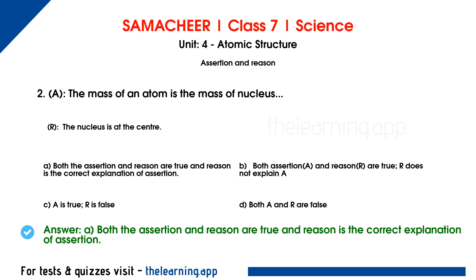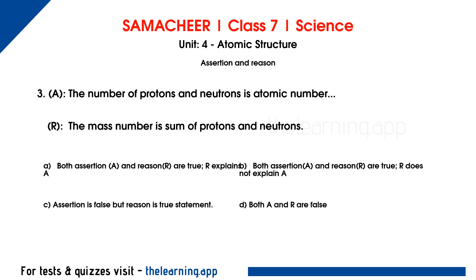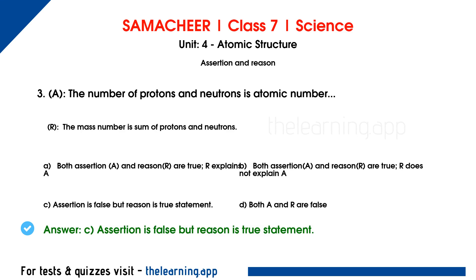Third assertion-reason question — Assertion: the number of protons and neutrons is the atomic number. Reason: the mass number is the sum of protons and neutrons. The assertion is false, because the atomic number is only the number of protons, not protons and neutrons together. The reason is true — mass number is the sum of protons and neutrons. So the correct answer is option C: assertion is false, but reason is a true statement.